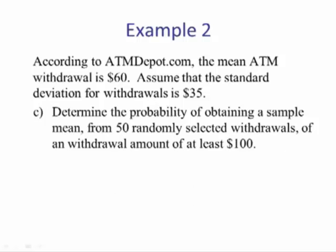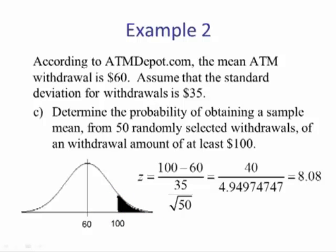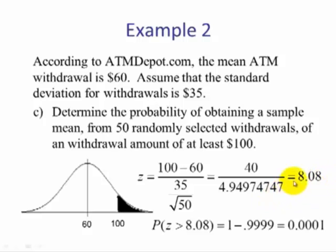Part C: Determine the probability of obtaining a sample mean from the 50 selected withdrawals of an amount of at least $100. At least means greater than, so we want area to the right of 100. We change 100 to a z-score and end up with 8.08. Using table 5, 8.08 is not on the table, so we use the default of 0.9999. Since we want area to the right, we do 1 minus 0.9999, which is 0.0001.